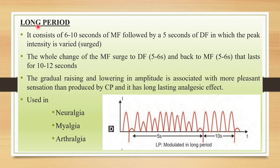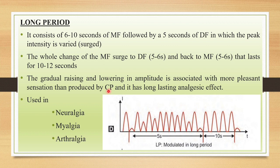In this diagram you can see one second of diaphase and one second of monophase. The next mode is long period or longest period. It consists of 6 to 10 seconds of monophasic followed by 5 seconds of diaphase in which the peak intensity is varied. The whole change from monophasic surge to diaphase takes 5 to 6 seconds, and back to monophasic lasts 10 to 12 seconds. The gradual raising and lowering in amplitude is associated with more pleasant sensation and it has a long-lasting analgesic effect.